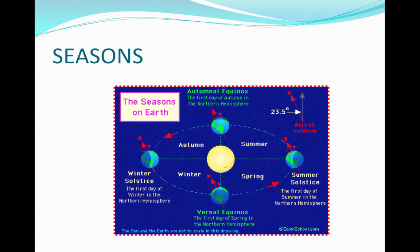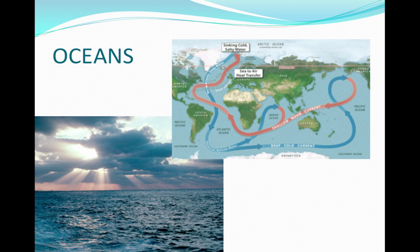Seasons are more distinct in middle latitudes and are due to the tilt of the Earth towards or away from the sun. Oceans also affect climate, especially at the coasts — they heat or cool air masses and create more precipitation. Water has a high specific heat and moderates climate.